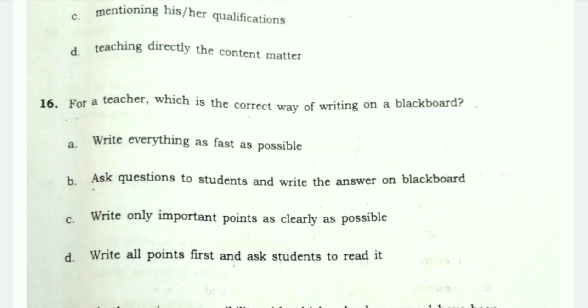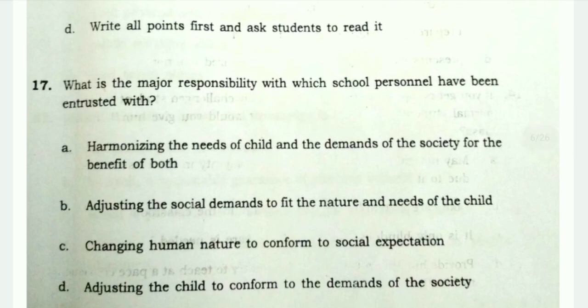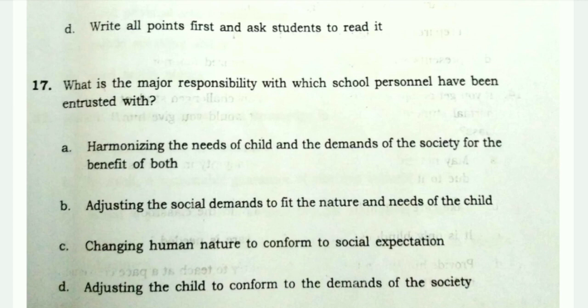Question 17: What is the major responsibility with which school personnel have been entrusted? Options include harmonizing the needs of the child and demands of society, adjusting social demands to fit the child, changing human nature to conform to social expectations, or adjusting the child to conform to the demands of society. Option D is correct — you make children learn social customs and rules so they can function better in society.